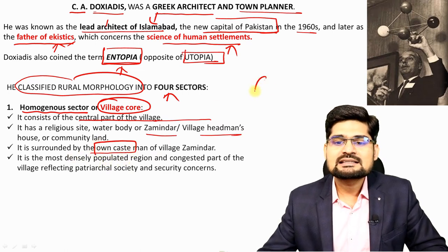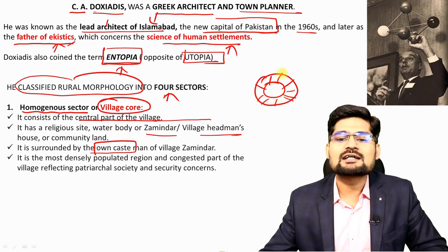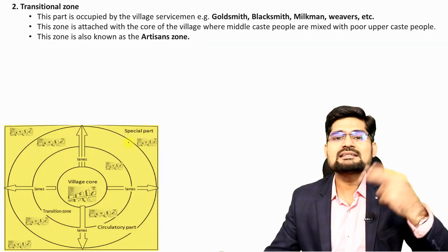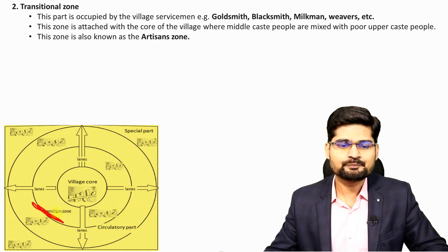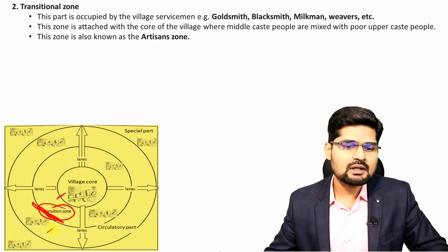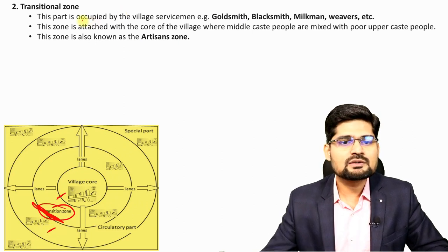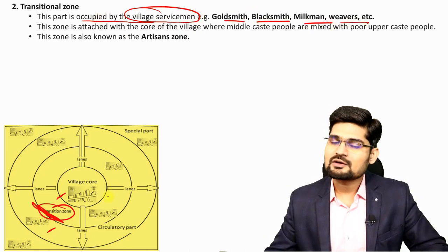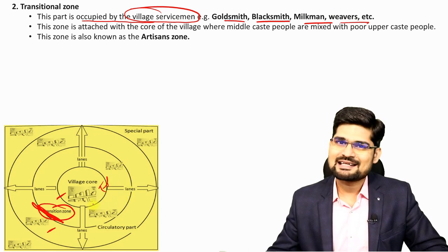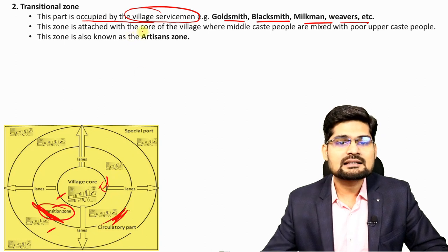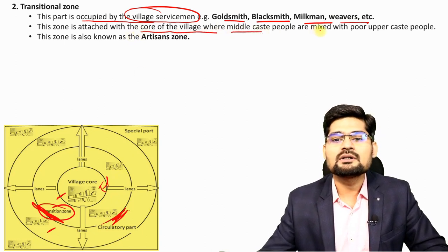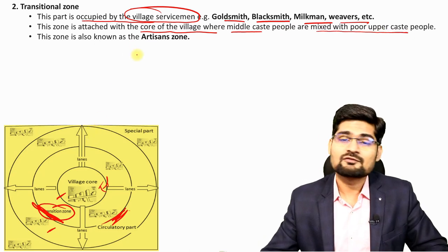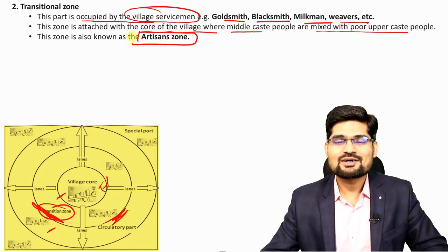The second zone is a transition zone between the village core and the circulatory part. This transition zone is occupied by village servicemen — goldsmiths, blacksmiths, milkmen, weavers — who stay in proximity but a little away from high-class residentials. Here, middle caste people are mixed with poor upper caste people. In the words of Doxiadis, this is called the artisan's zone, which serves as the transitional zone.